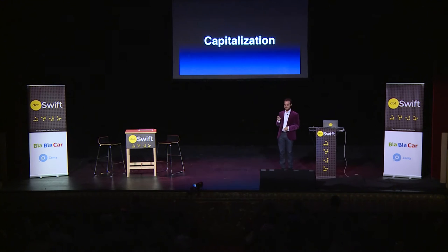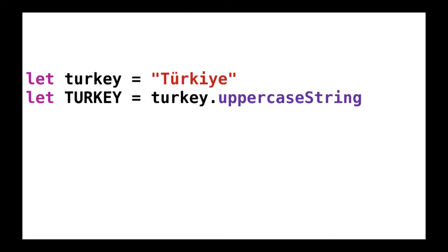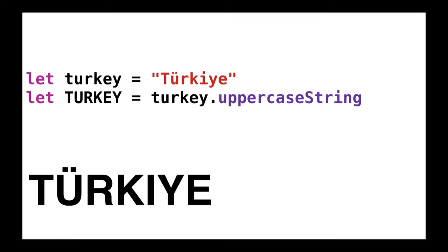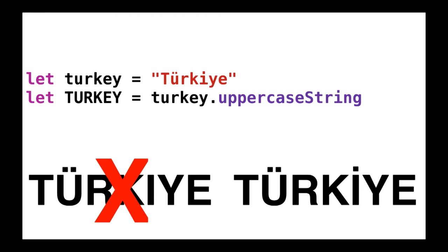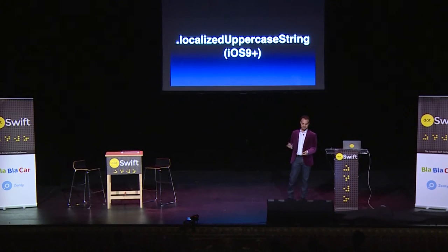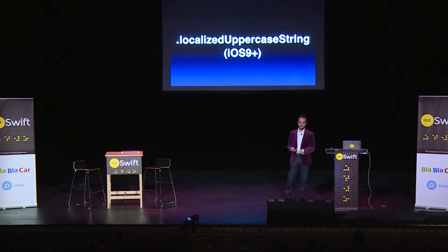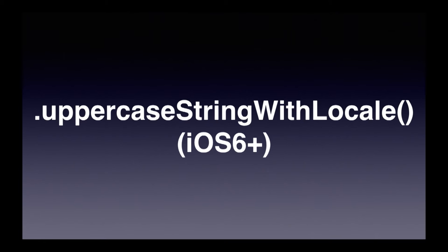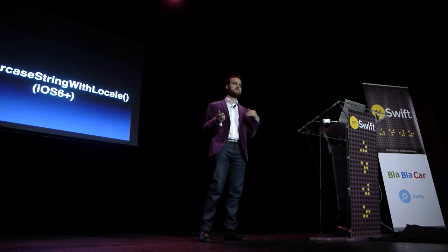Our next stop is Turkey. Turkey has Turkish delight, Turkish coffee, and capitalization that is slightly unusual. If we have a string with the name of Turkey in Turkish and we want the uppercase version of it, this is what we'd get just by doing uppercaseString — and this is wrong. It turns out capital I in Turkish has a dot above it. If you think about a Turkish user seeing the name of their country misspelled, that's pretty bad. From iOS 9 in Swift, we have localizedUppercaseString, which reads the NSLocale and correctly capitalizes it. Before that, uppercaseStringWithLocale was available from iOS 6.